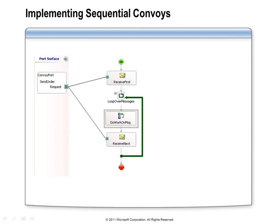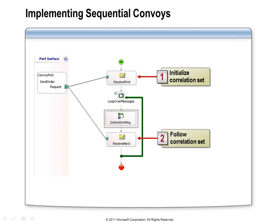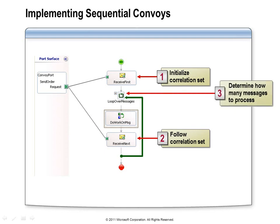Here we have a picture of a very simple sequential convoy designed to handle messages that are all of the same type — the receive port defines only one operation. Even though this is simple, it illustrates the three steps needed to configure a sequential convoy. First, configure the first receive shape to initialize the correlation set. Then configure any other receive shapes participating in this convoy to follow that correlation set. Finally, configure a loop condition that evaluates to true as long as the orchestration should continue waiting for new messages. When the orchestration has all the messages it needs and the loop condition evaluates to false, it will break out of the loop and move on.